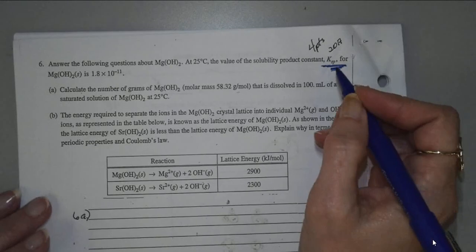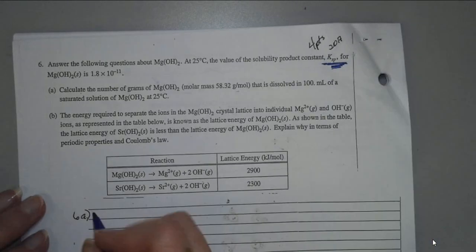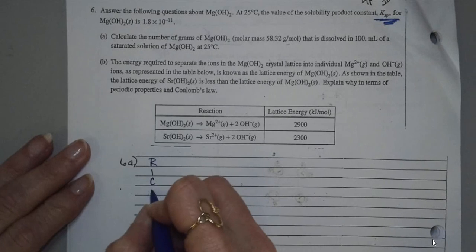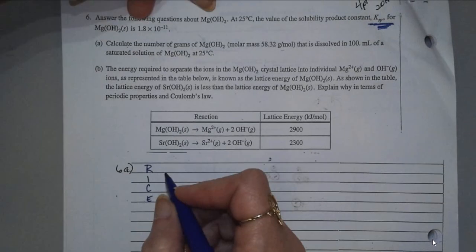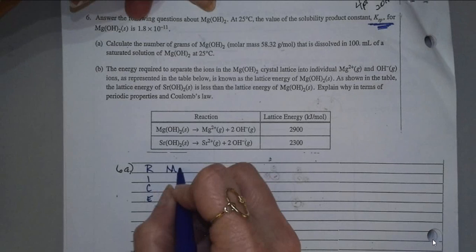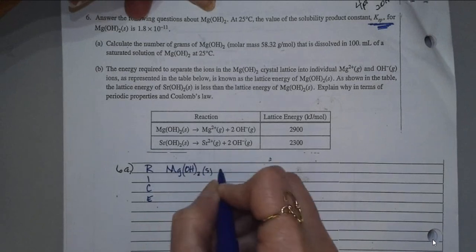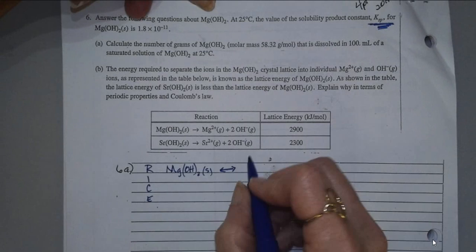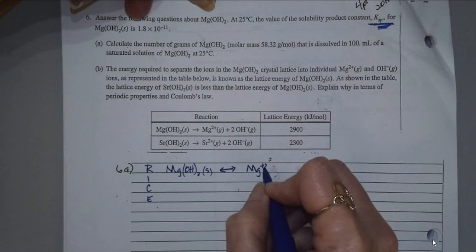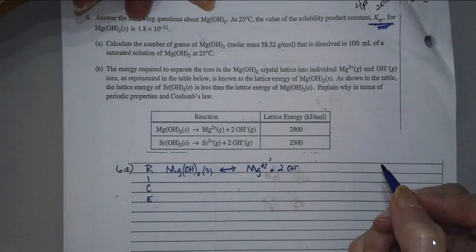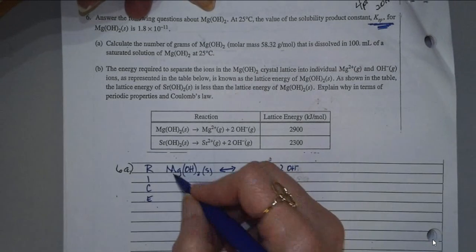If it's talking about solubility, first thing you want to do is make a RICE table. So let's make our RICE table here. So our reaction, it's solubility. So we have Mg(OH)2, and that's our solid. And it's going to dissolve into Mg2+ ion plus 2 of the hydroxide ions. This is solid, so we can ignore this. So what we have left are these two sections here.